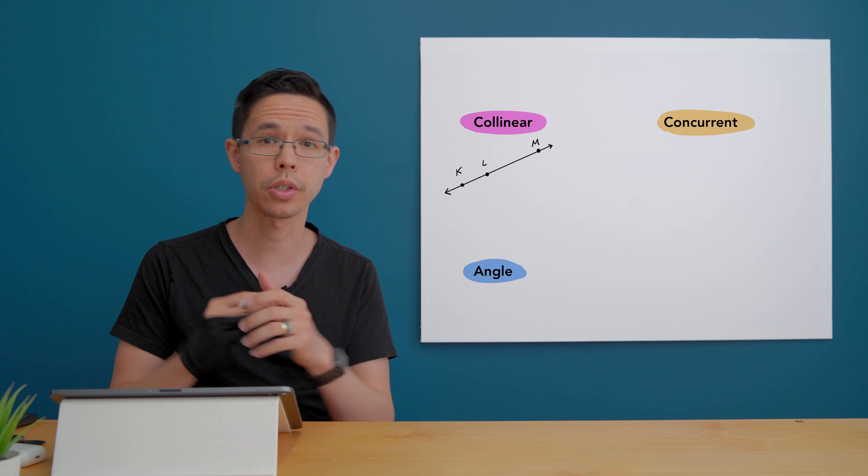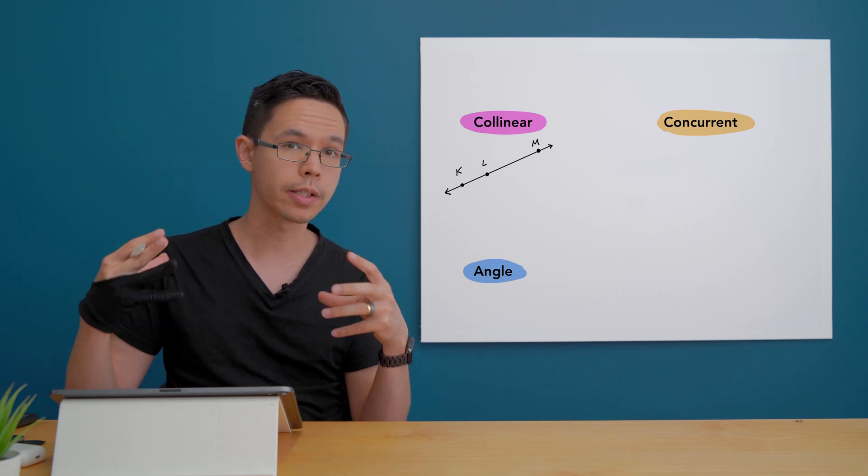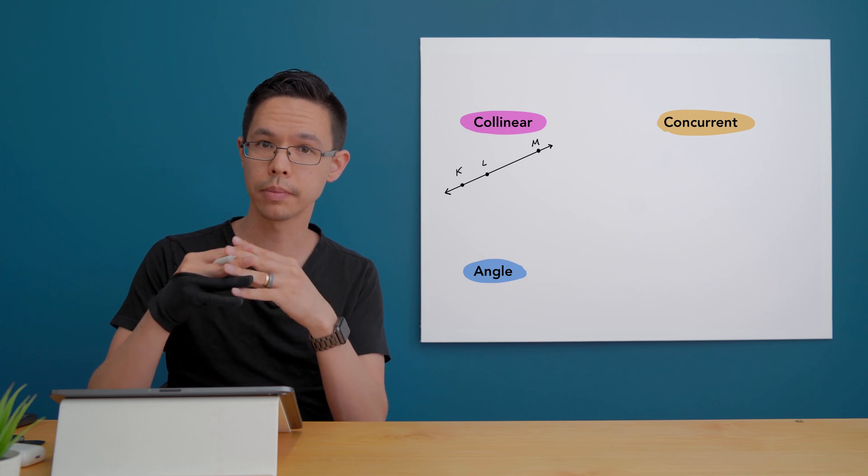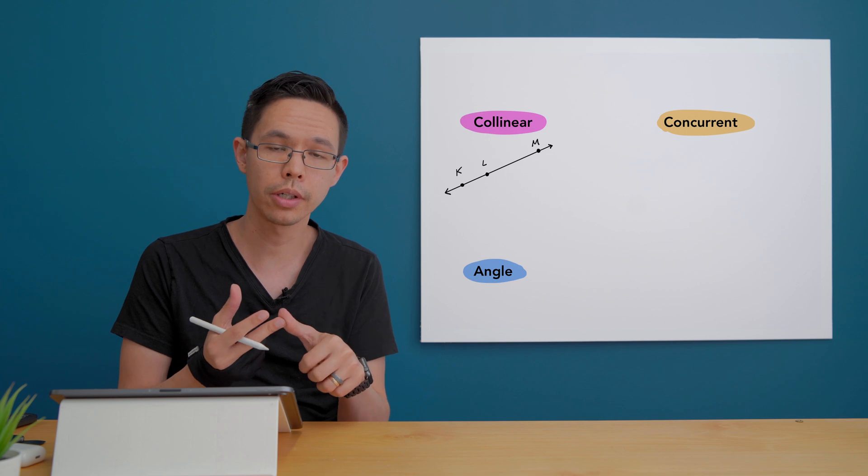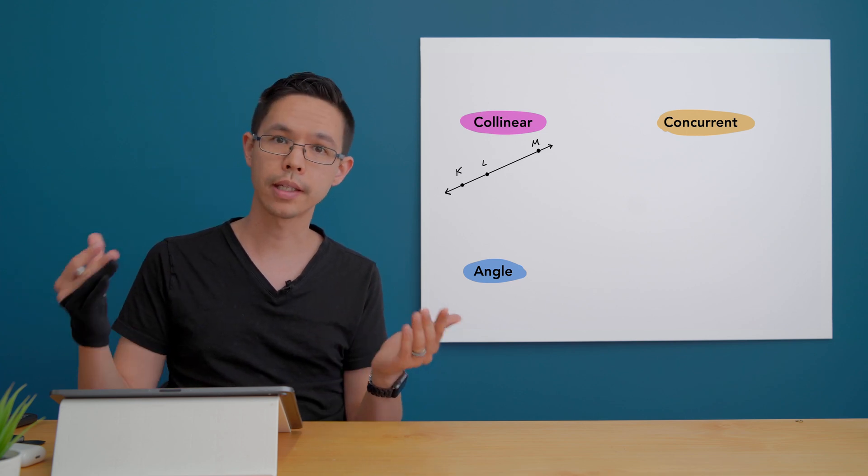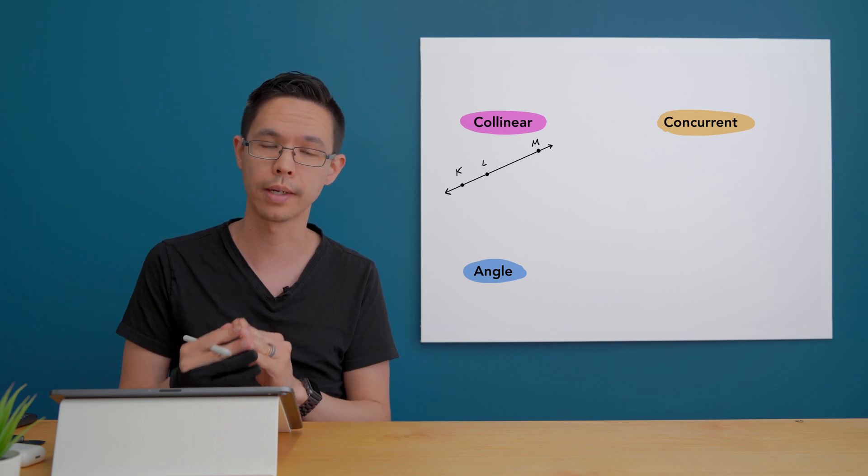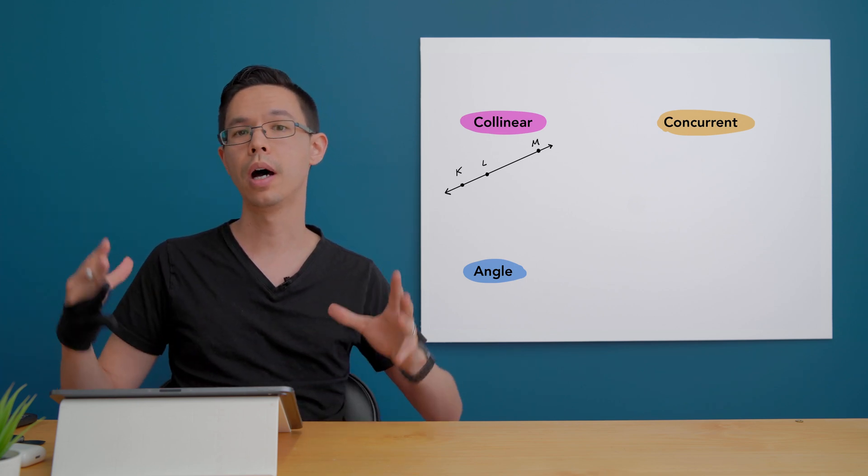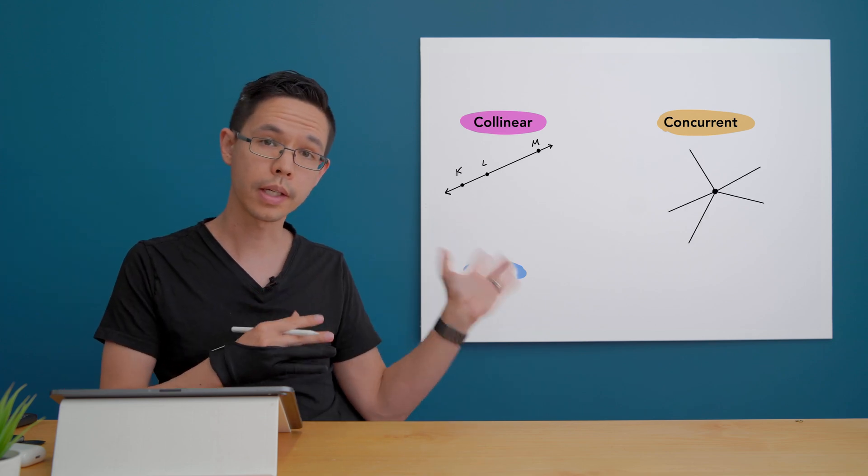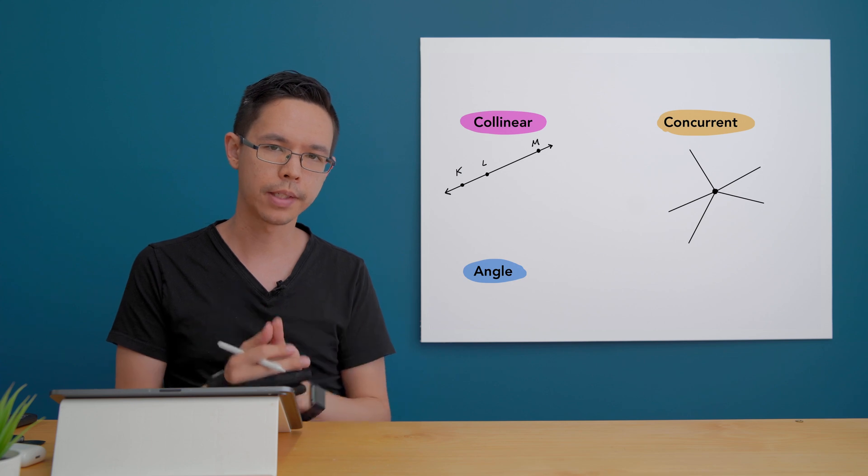Let's move to our next one which is concurrent. Concurrent means these lines all meet at the same location. So there could be lines, there could be segments, they could be even curves. But what matters is that they all have a common meeting point in the middle somewhere. We would say that all of those lines as a collective are concurrent.